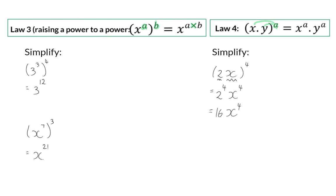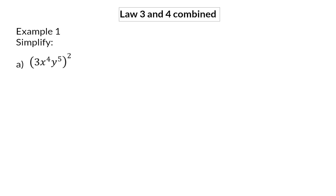Let's have a look at combinations of these two laws. Example 1. Simplify. In A, we have 3 different bases to the power of 2, and law 4 states that the 2, the exponent, should be applied to each one of the bases. For the first base, we will now have 3 to the power of 2.